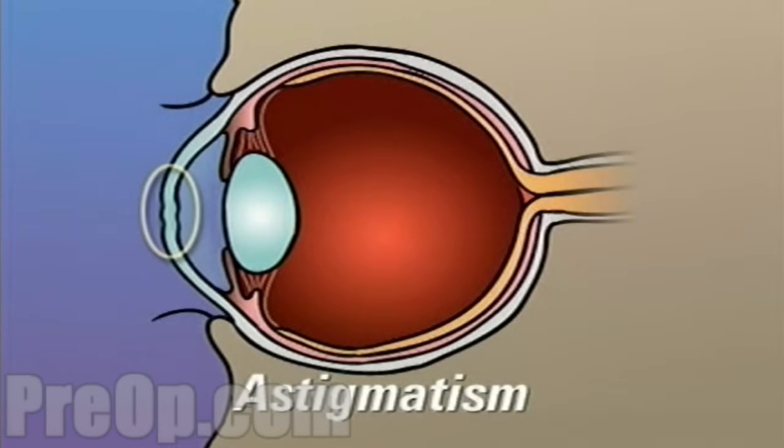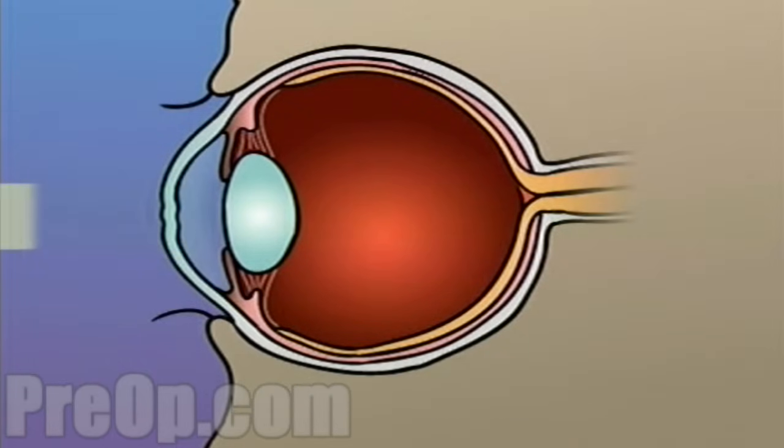Astigmatism occurs when the cornea is unevenly curved, causing light rays to fall off center or not to focus properly at all.